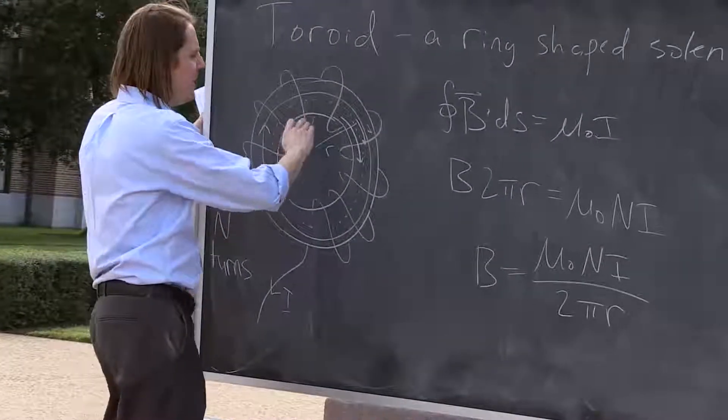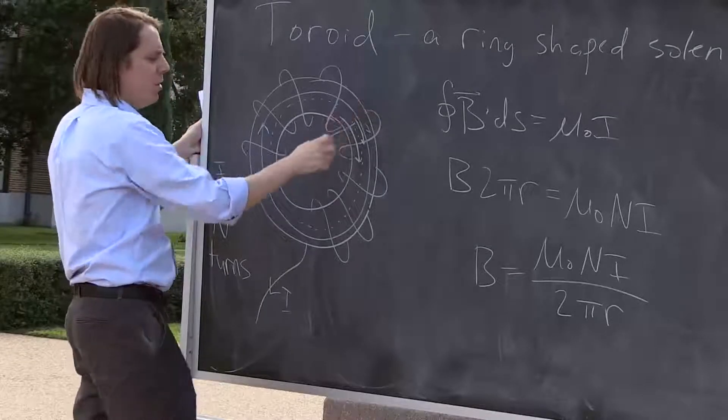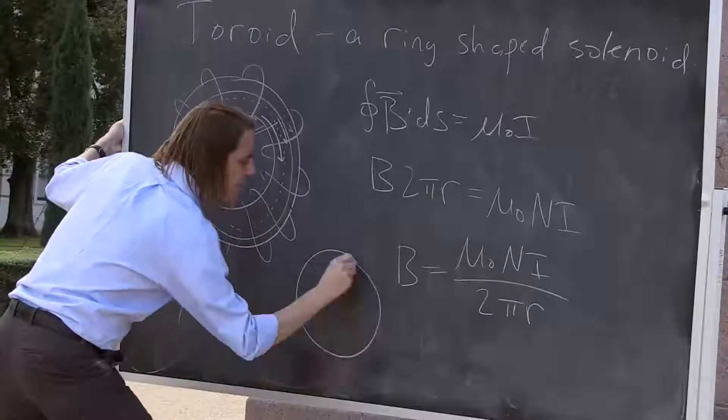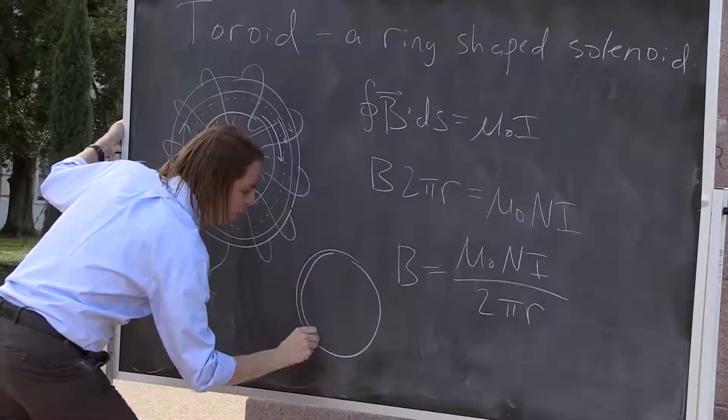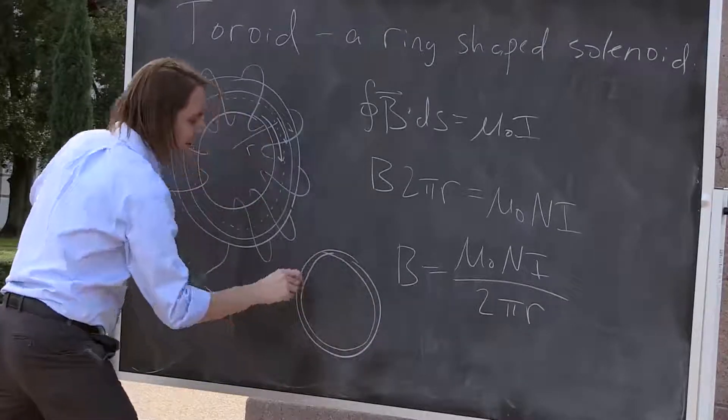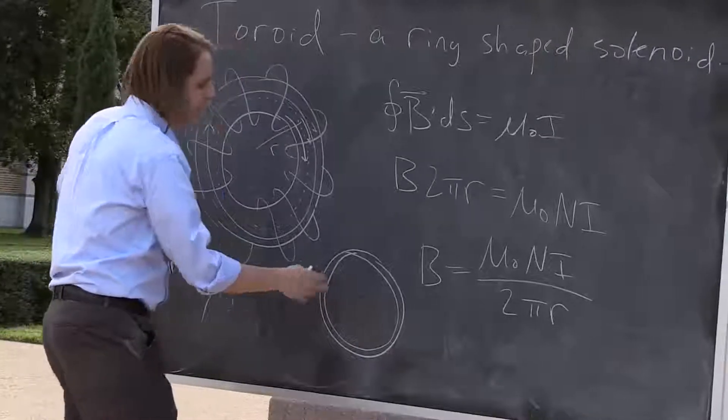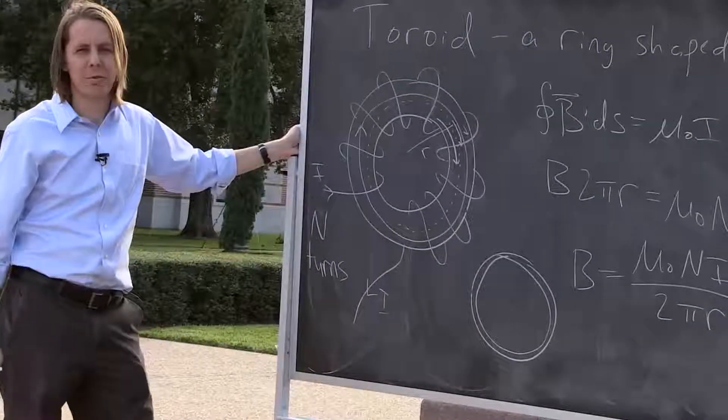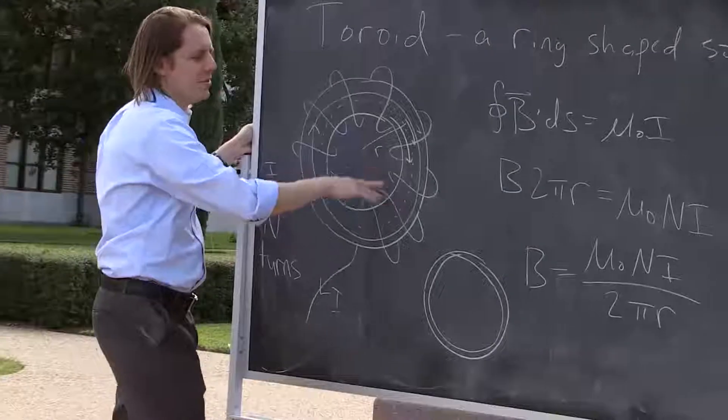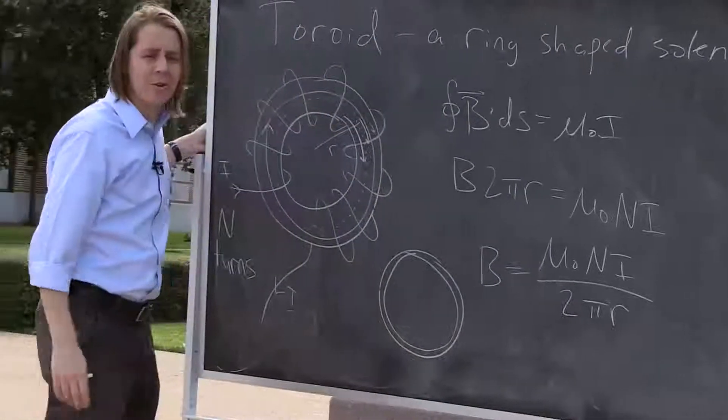But if you have a toroid where the little changes in radius are small, you know, if the toroid looks like this and you wrap around something like that, then the change in radius is pretty small compared to how far out you are. So often you can imagine that the toroid has a constant field through it or inside of it. But really, technically, it does depend a little bit on the radius.